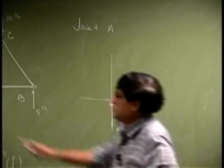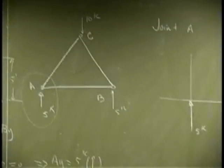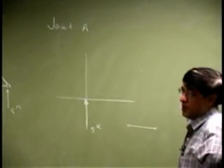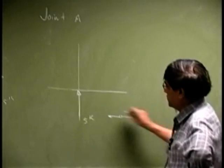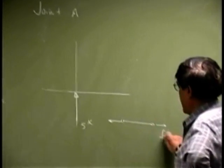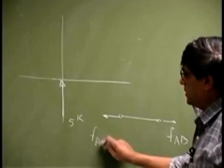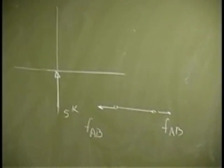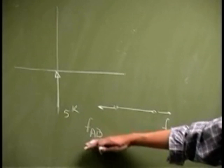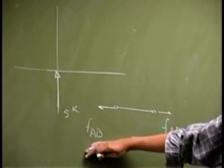Then this member AB. I mean I could take the member by itself and then place the force in the member as FAB and another FAB. And see at this point it is really not known what this magnitude is.